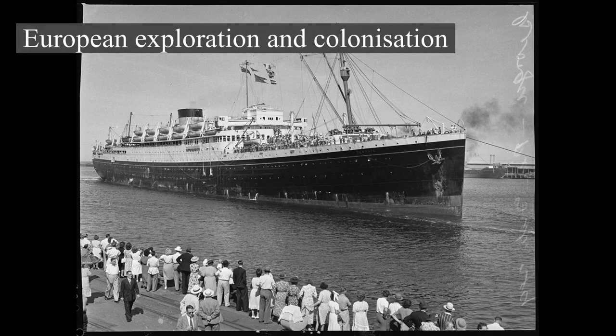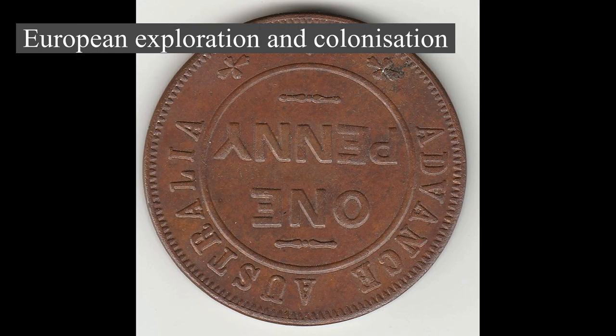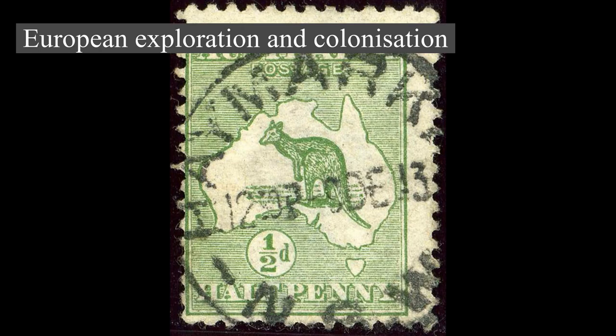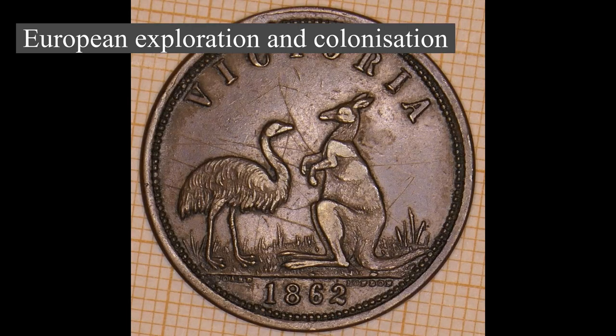The northern coasts and waters of Australia were visited sporadically for trade by Macassan fishermen from what is now Indonesia. The first recorded European sighting of the Australian mainland and the first recorded European landfall on the Australian continent are attributed to the Dutch. The first ship and crew to chart the Australian coast and meet with Aboriginal people was the Duyfken, captained by Dutch navigator Willem Janszoon. He sighted the coast of Cape York Peninsula in early 1606 and made landfall on 26 February 1606 at the Pennefather River near the modern town of Weipa on Cape York. Later that year, Spanish explorer Luis Váez de Torres sailed through and navigated the Torres Strait Islands.